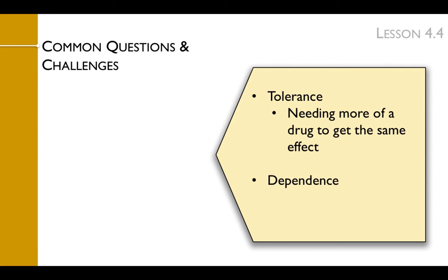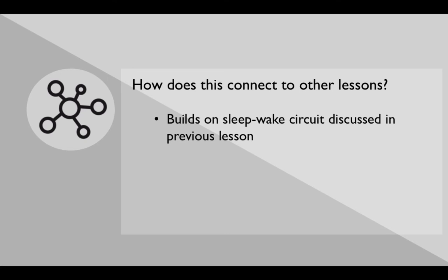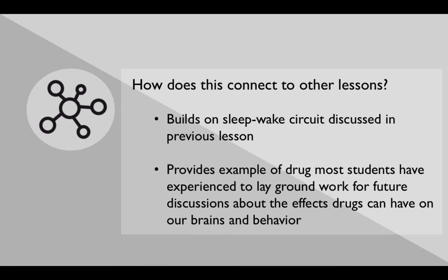Dependence is needing a drug to function normally. So for someone who has a lot of caffeine all the time, their body adjusts and biologically requires it to function normally. At the end of this lesson, students should further appreciate the complexity of our neural circuits, including the various components that make them up, and how complex the various controls are for regulating their output. This lesson builds on the sleep-wake circuit discussed in the previous lesson, and provides an example of a drug most students have experienced to lay the groundwork for future discussions about the effects drugs can have on our brains and behavior.